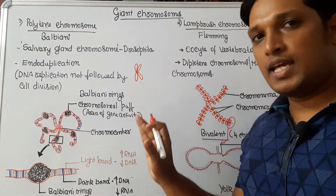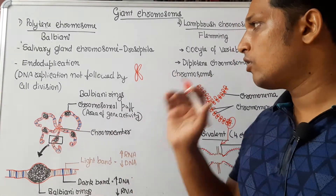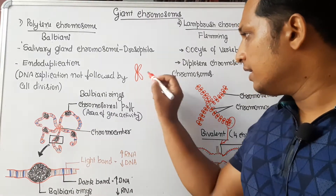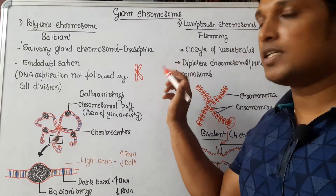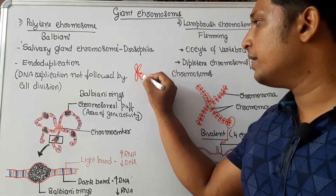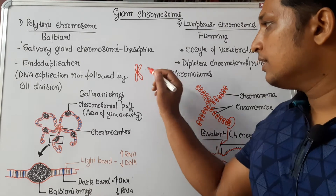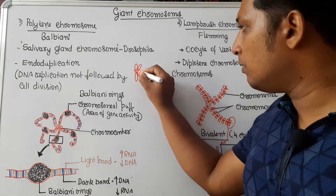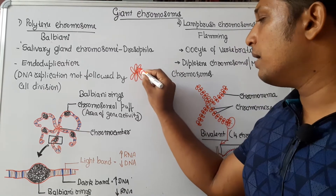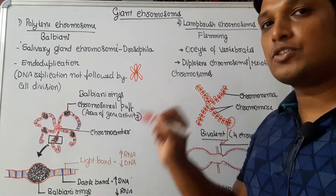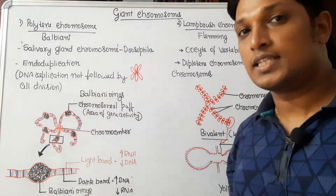In the anaphase stage, these chromatids should separate — that is the normal cell cycle. But if DNA replication is not followed by cell division, chromatids remain attached to the same point. There will be multiple DNA replications, and as a result, multiple chromatids remain attached to the same centromere. That is endoduplication.